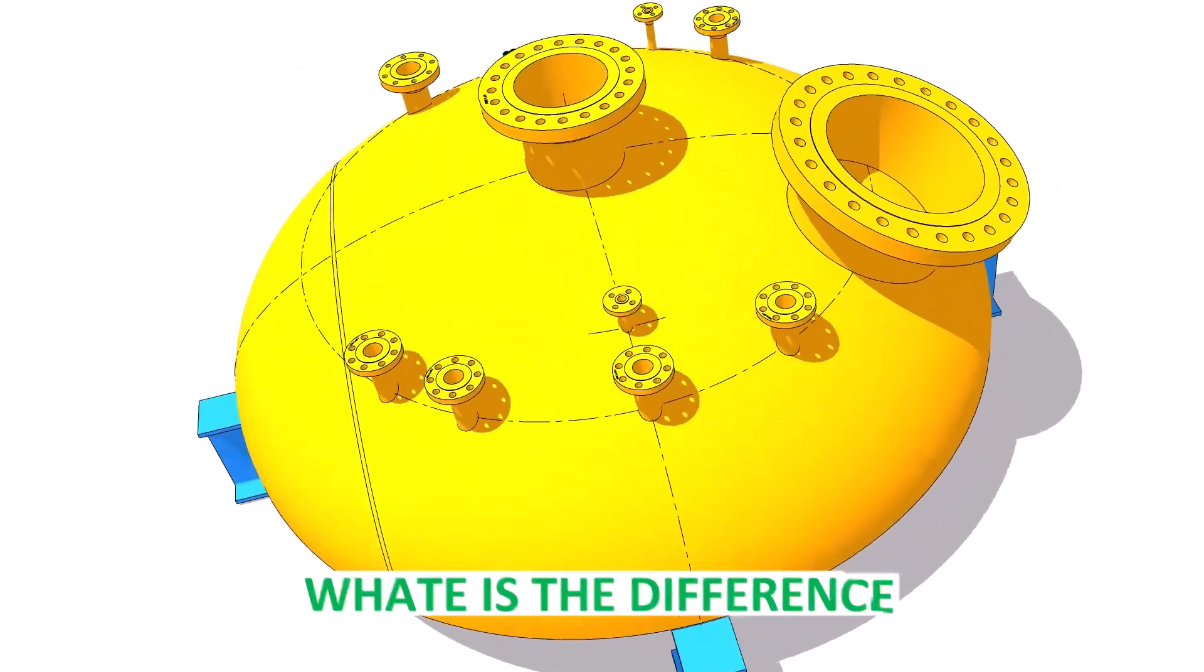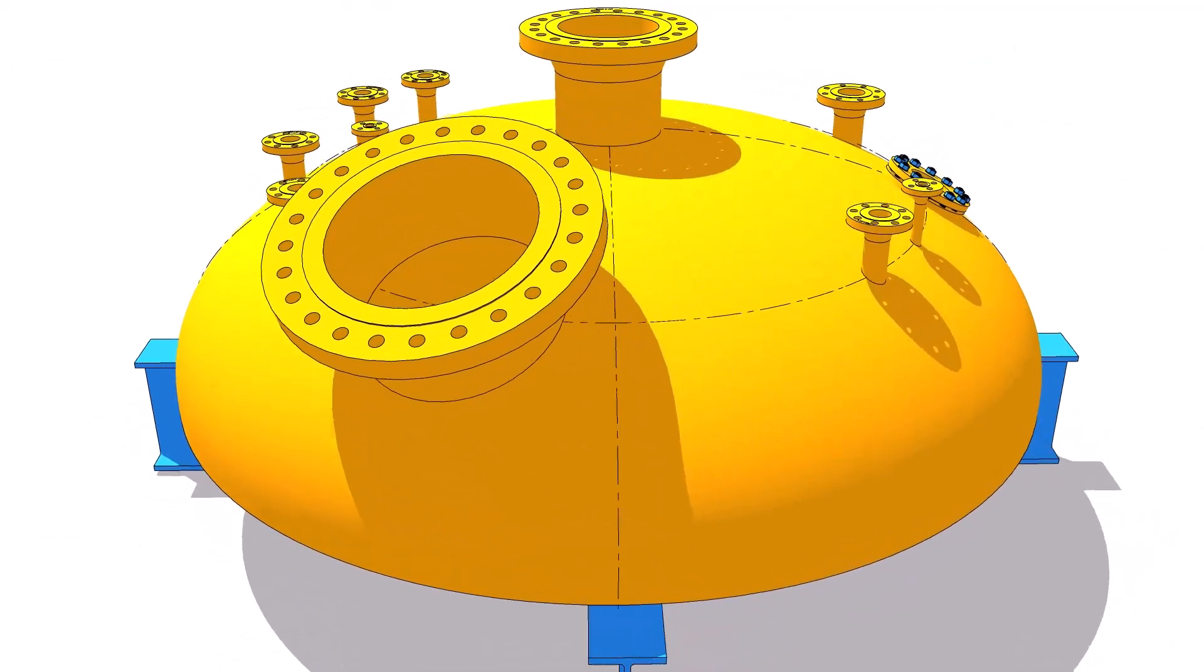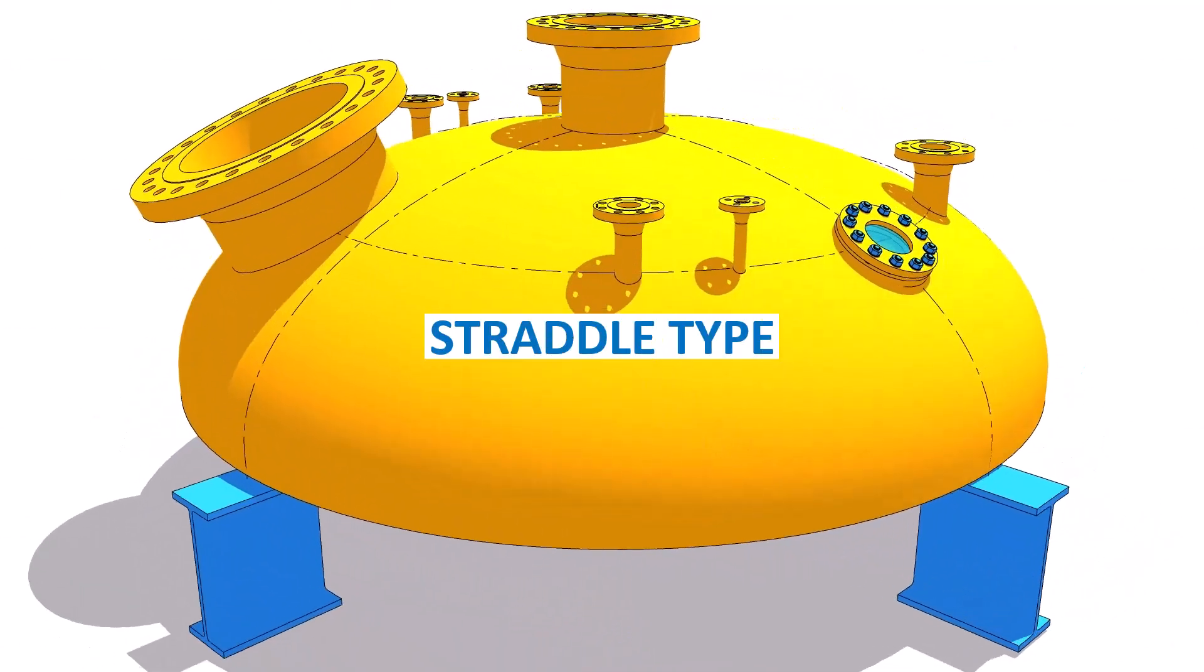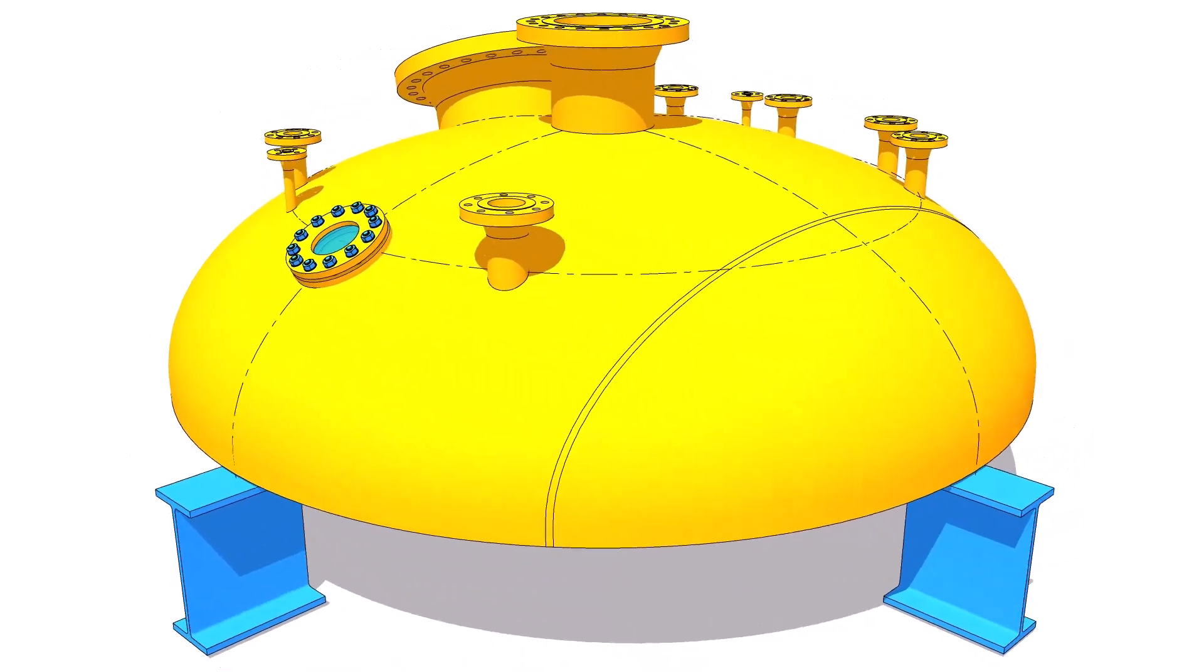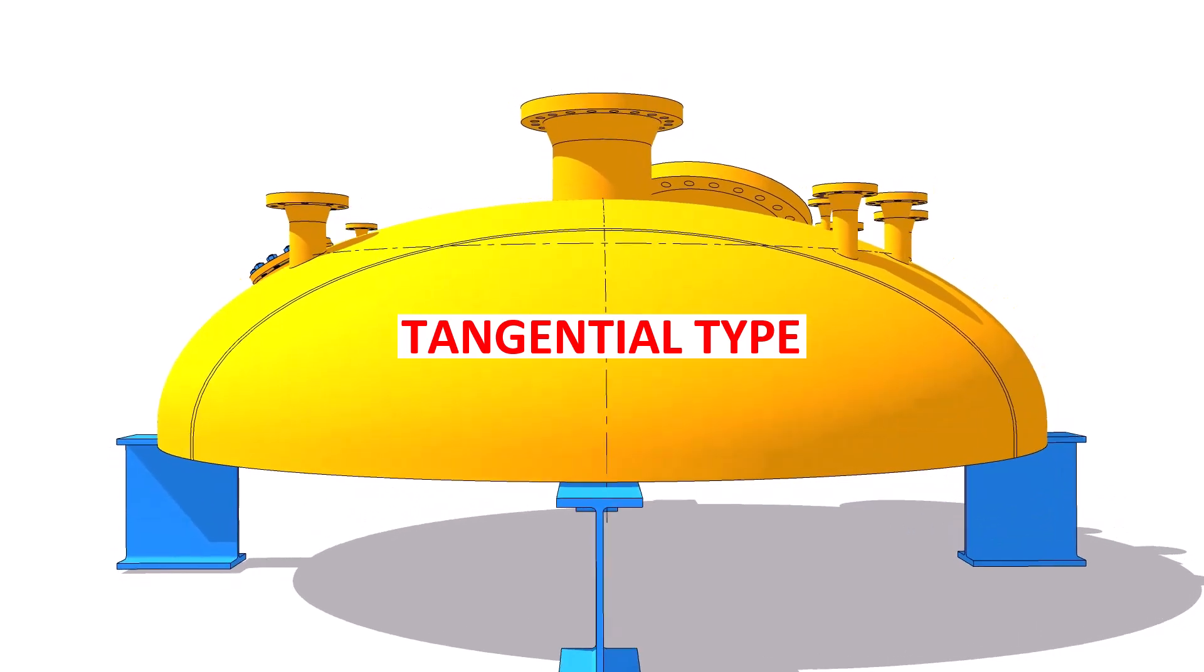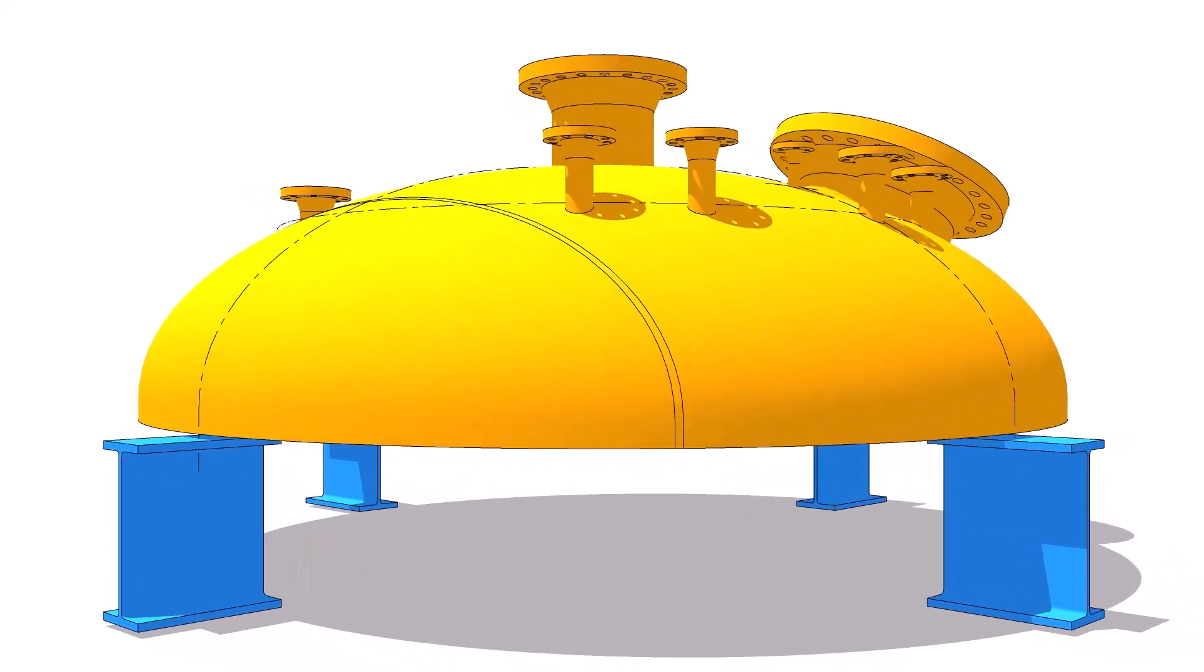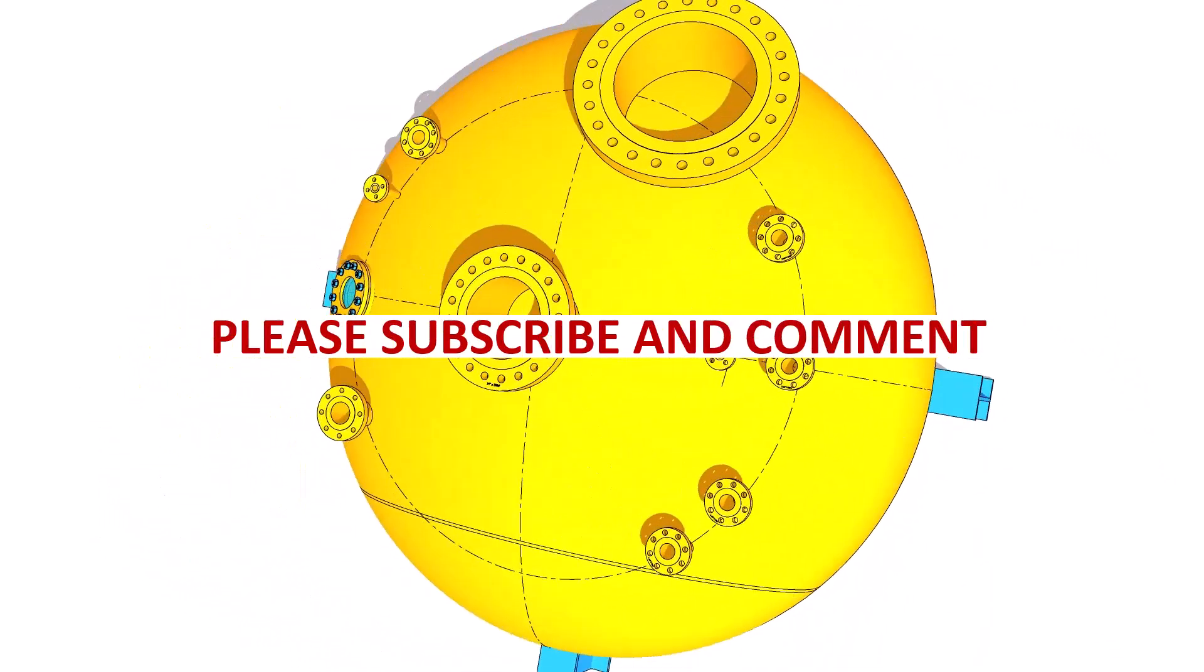Usually, there are two ways to fit up nozzles on a dish end: straddle type and tangential type. In my previous video, I explained the difference between the two methods. In this video, I will show you how to fit up a nozzle on a dish end following the tangential method. If you like this video, please subscribe and comment.